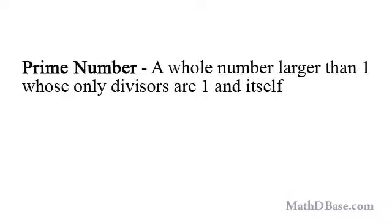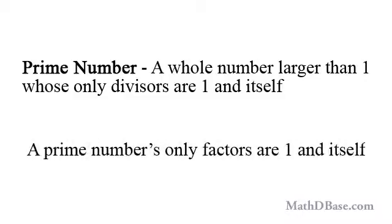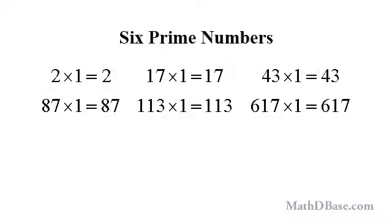A prime number is a whole number larger than one whose only divisors are one and itself. In other words, a prime number's only factors are one and itself. 2, 17, 43, 87, 113, and 617 are six examples of prime numbers. Though one technically satisfies the definition to be a prime, since its only divisors are one and itself, by convention, two is agreed to be the smallest prime.